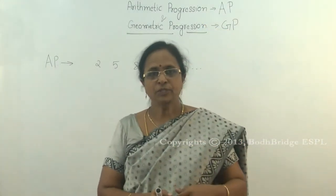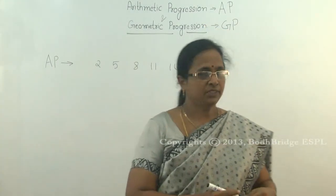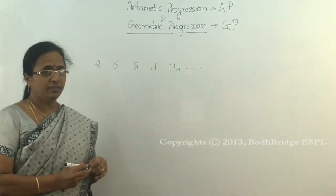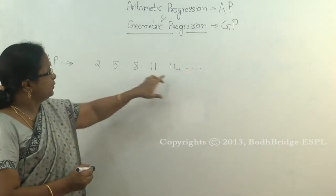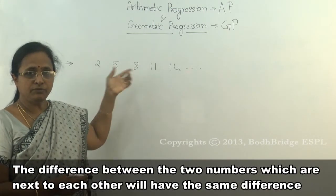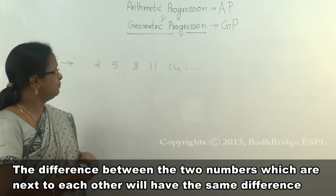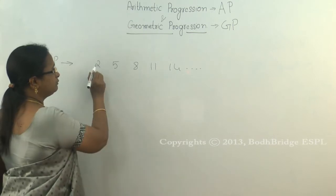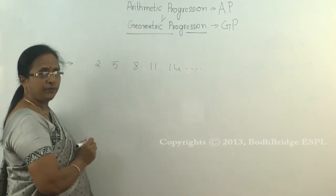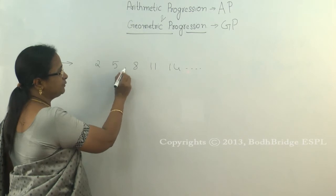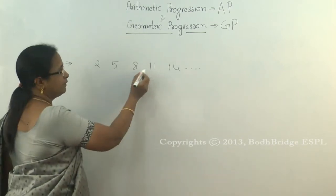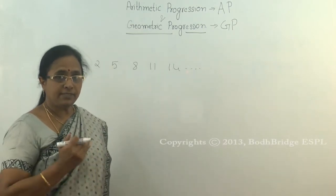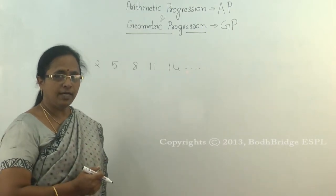Today what you're going to see is arithmetic progression and geometric progression. Arithmetic progression is a series where the difference between consecutive numbers is the same. For example, the first number is 2 and the next is 5 — the difference is 3. Similarly, 8 minus 5 is 3, and 11 minus 8 is 3. A series of this kind is called arithmetic progression.